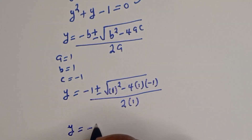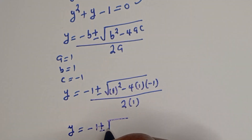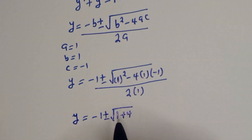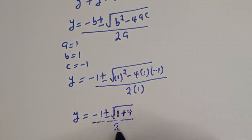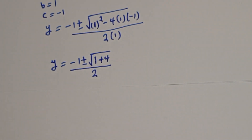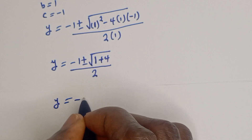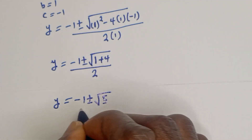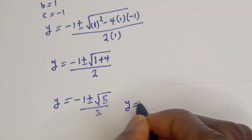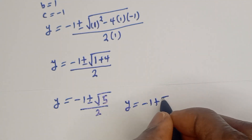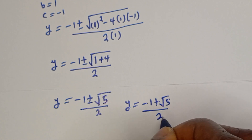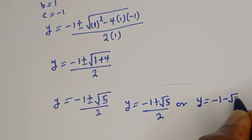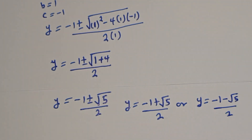Computing: y equals negative 1 plus or minus square root of 1 plus 4, over 2, which gives square root of 5. So y equals (negative 1 plus root 5) over 2, or y equals (negative 1 minus root 5) over 2.